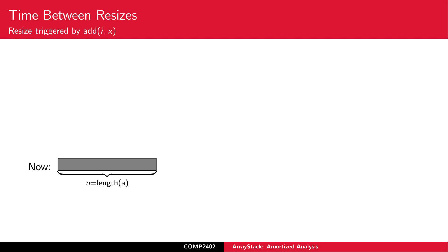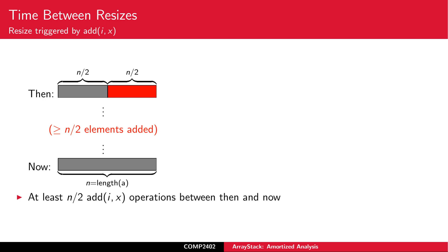Now, consider the situation just before a resize triggered by adding an element. This happens when A is completely full. The length of A is equal to N. If we look back at the most recent resize operation, the one that allocated the current array A, we see that right after the resize operation, A was exactly half full. It contained exactly N over 2 elements. Since A now contains N elements, we can conclude that an additional N over 2 elements were added since the last resize operation. This means that between the previous and current resize operations, at least N over 2 add IX operations were performed.